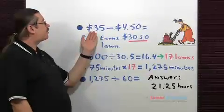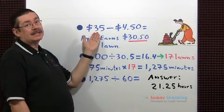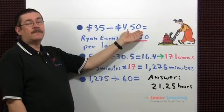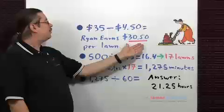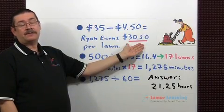We know Ryan charges $35 per lawn, but the expenses are $4.50 per lawn. So to find how much money he earns per lawn, just subtract the two values and we find out that Ryan earns $30.50 per lawn.